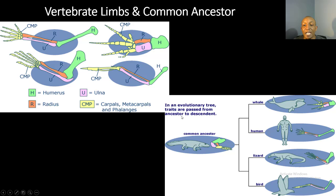In an evolutionary tree, traits are passed from ancestor to descendant. Here's the common ancestor that all four of these organisms have in common. Notice the organisms branch off based upon the function of their structures — the whale uses its structure to swim, the human uses its arm structure to grasp objects, the lizard uses its foot structure to walk, and the bird uses its structure to fly. Each organism has a similar structure but a different function.